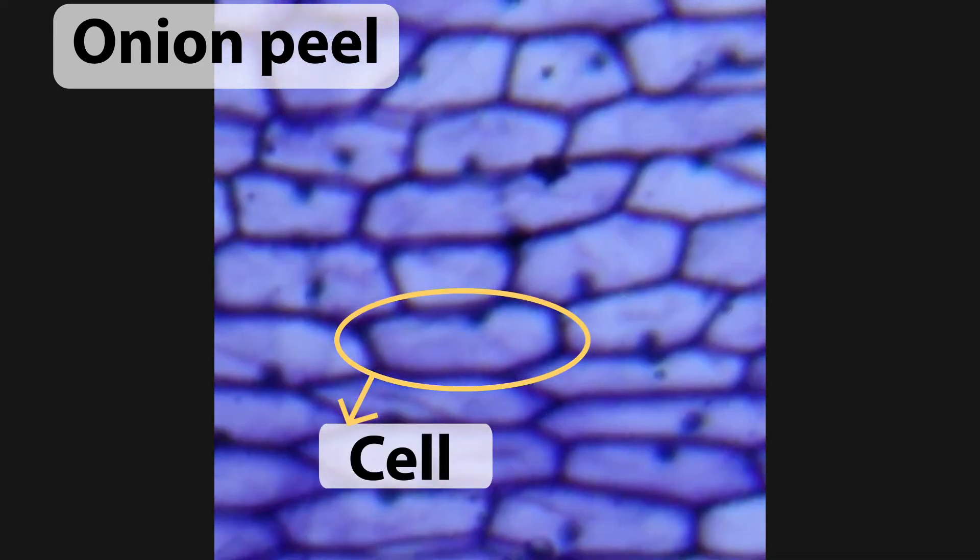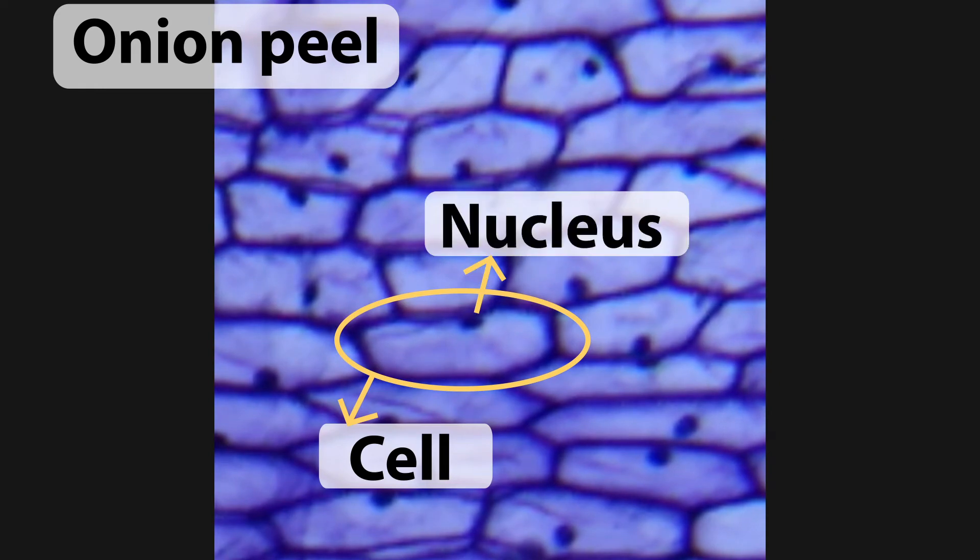Every box you see there is a single cell, with the nucleus in the center, which looks like a tiny circle here, about which we will learn more in the upcoming videos.